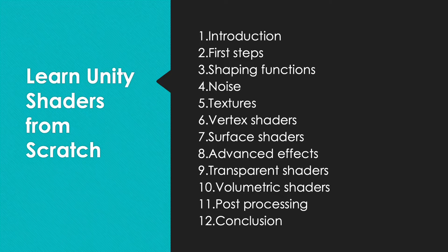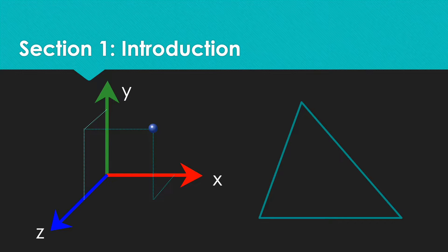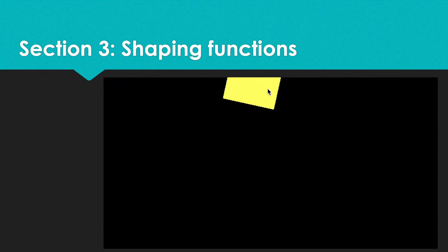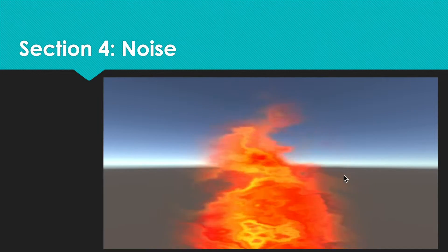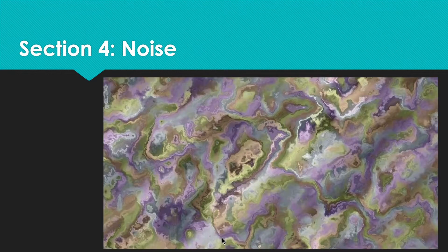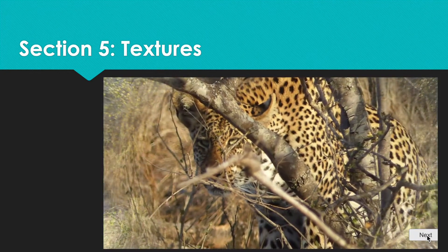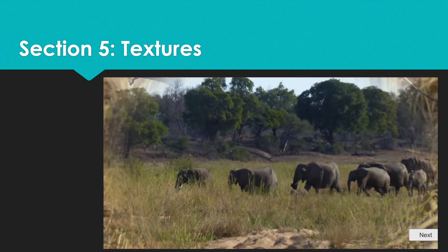The course is split into sections. Section 1 introduces some basic concepts. In section 2 you start to write your first shaders. In section 3 we look at shaping functions, and in section 4 we start to look at the amazing flexibility of adding noise functions to your shader code. In section 5 we look at showing images or textures in your shader and how you can play around with these at lightning speeds.